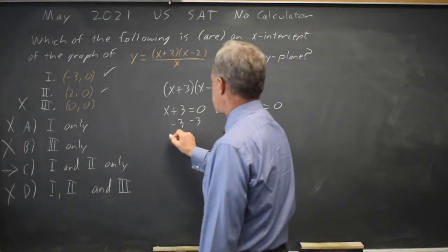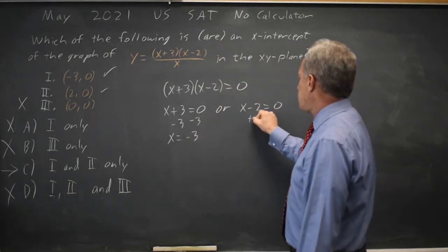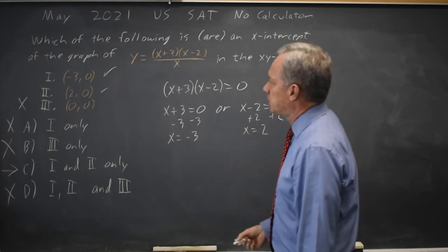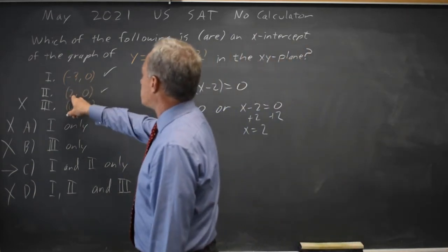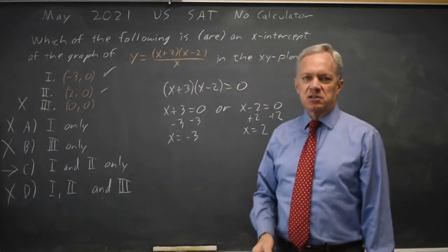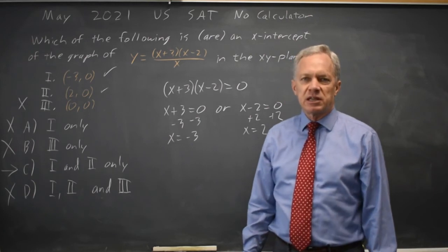Subtracting 3 from both sides gives us x equals negative 3 on the left. Or adding 2 to both sides gives us x equals positive 2 on the right. x values of negative 3 and positive 2 work. I did not get x equals 0 as a solution, so option 3 does not work. That again gives us choice C.